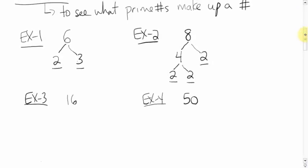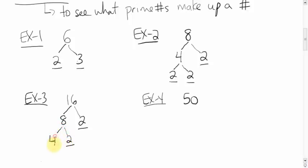For the prime factors of 16, first figure out what two numbers make up 16. You could do 8 times 2, or 4 times 4 — either way you'll get the same answer. Let's go with 8 times 2. 2 is prime, so we stop there. 8 breaks into 4 times 2; 2 is prime, so we stop. 4 further breaks into 2 and 2. So 16's prime factors are 2 times 2 times 2 times 2 — which is 2 to the power of 4.